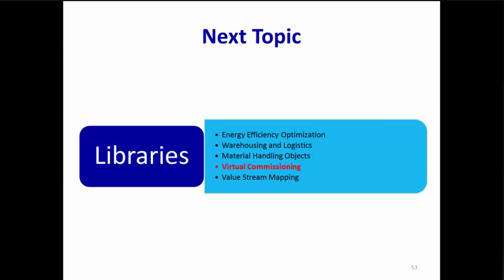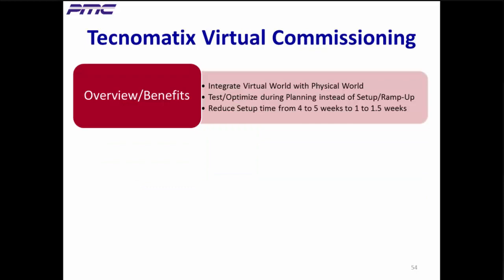I hope that gave you a good idea of just how many different objects Plant Sim has for material handling. Our next topic is virtual commissioning. Setup and ramp up of the systems implementation for robotics and automation is called commissioning. Traditionally, this step is done after the physical system is built on the shop floor. Technomatix virtual commissioning lets you test and optimize commissioning during the planning and design phase in a virtual environment that takes into account equipment like robots, PLCs, conveyors, light barriers, etc. without any risk to the real facility. Doing this cuts typical setup and ramp up time from four to five weeks to one to one and a half weeks, reducing time to job one.